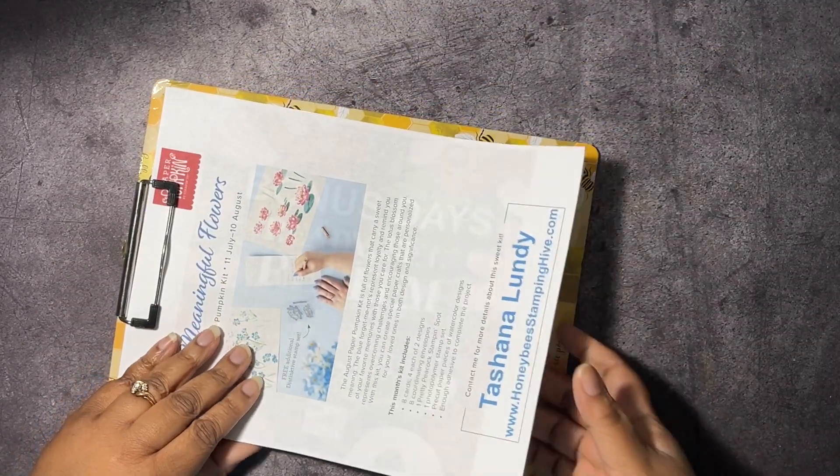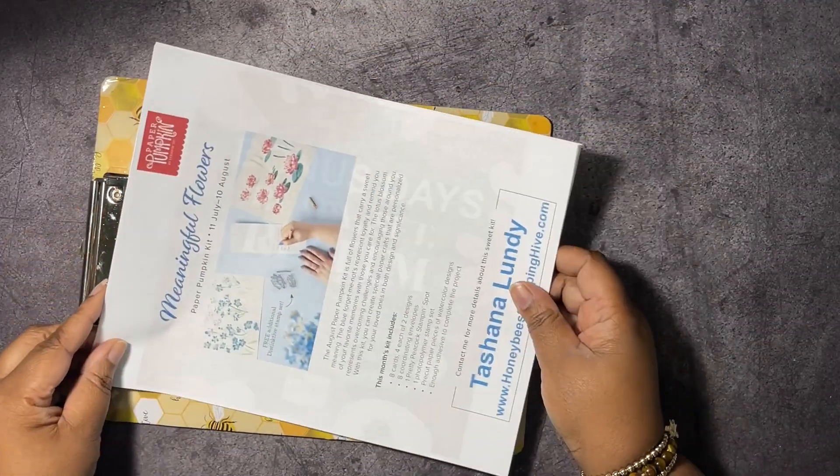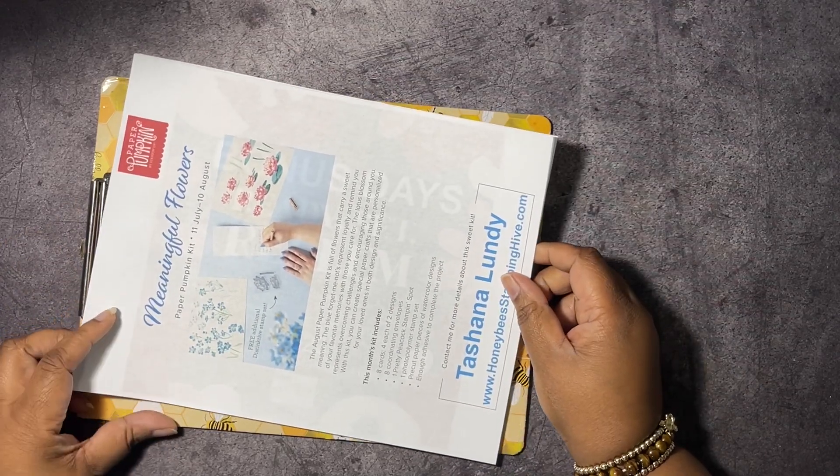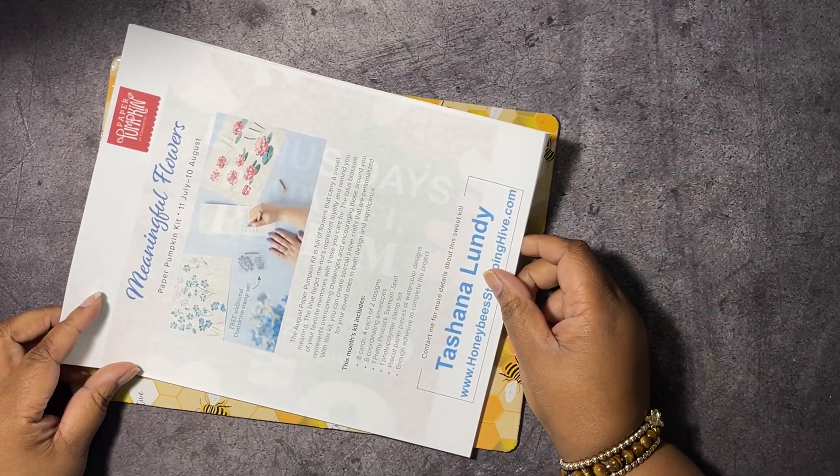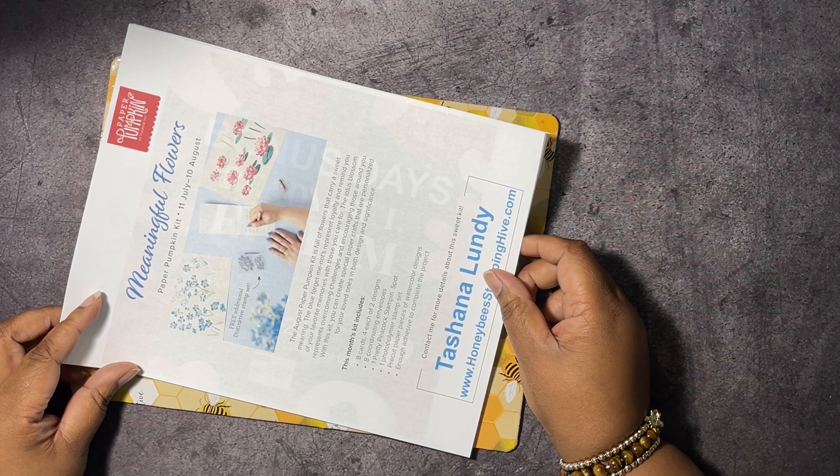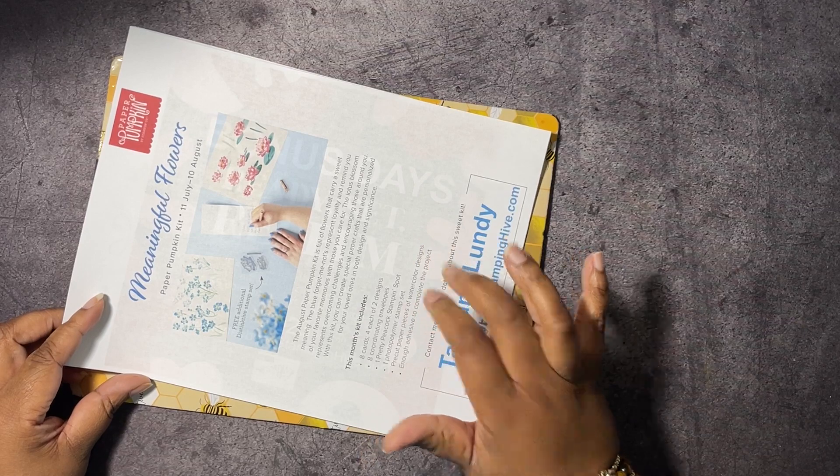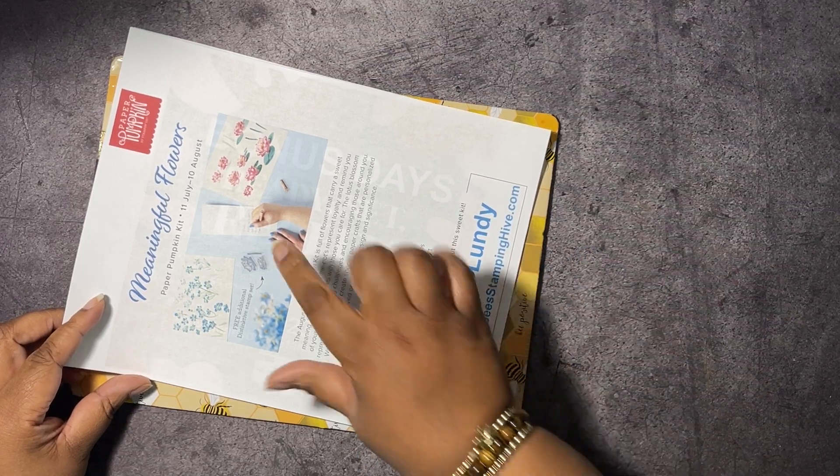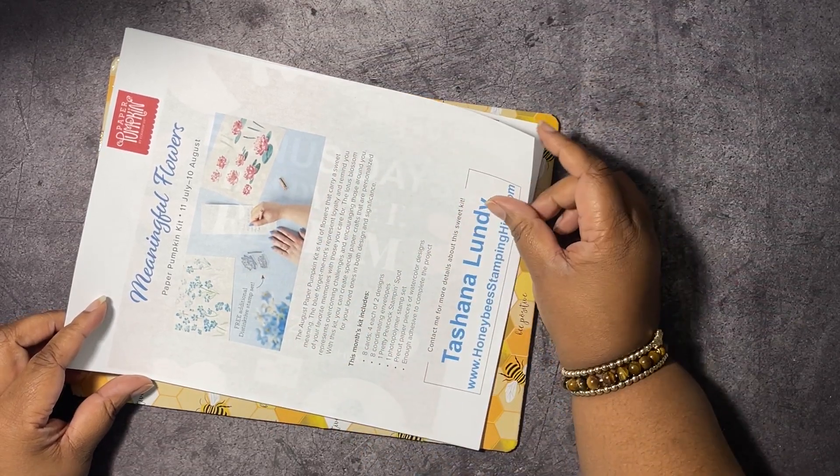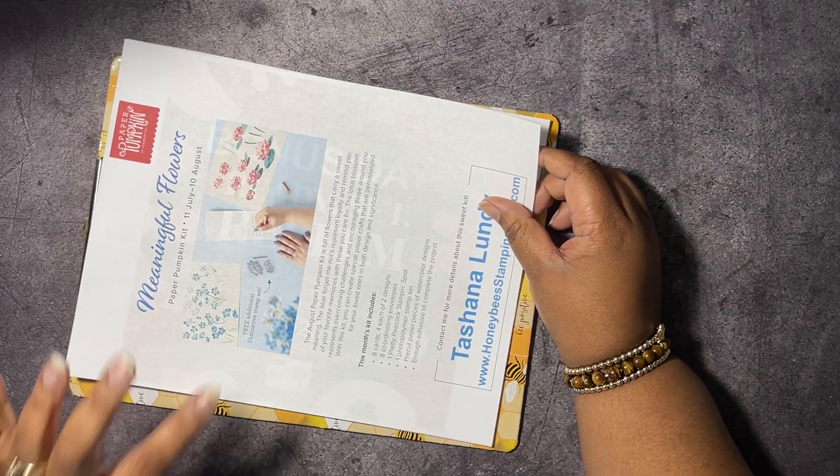Before we get started on our project, we have to go over the buzzworthy business of the day. We're going to start with our August Paper Pumpkin, Meaningful Flowers. This kit is going to make eight cards and it's going to have a Pretty Peacock stamping spot. There's a link in the description box below for you to subscribe to Paper Pumpkin. If you want this particular kit, you have until August 10th to subscribe to get it.